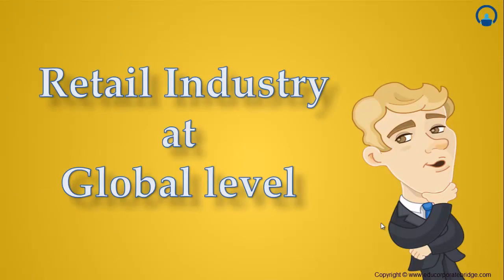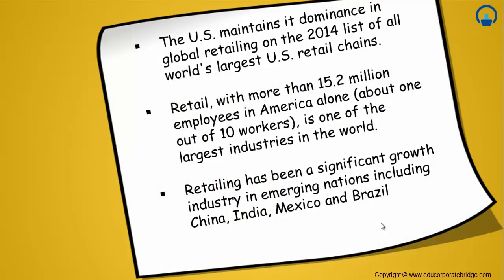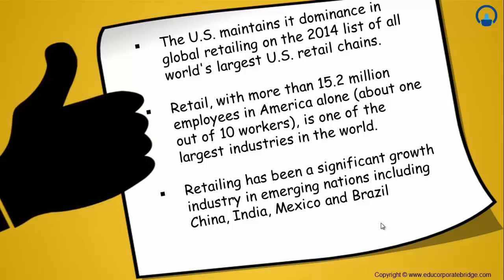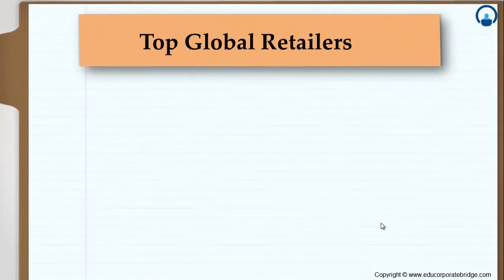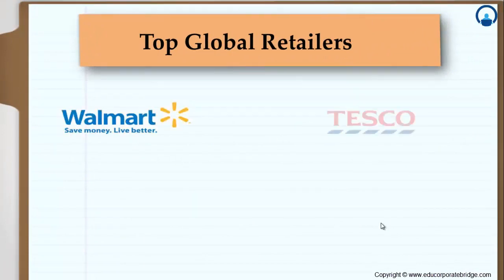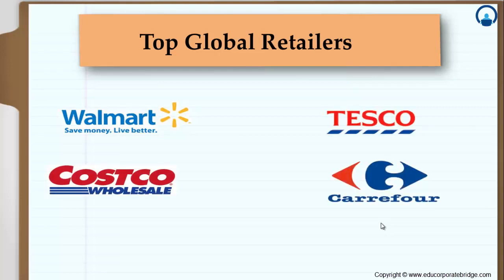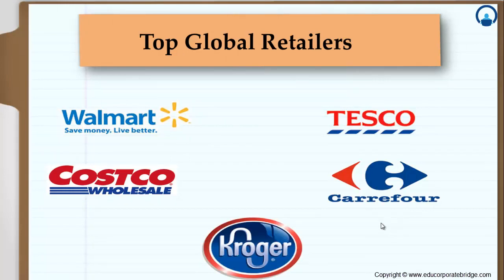So let's have a look at the retail industry at the global level. It is needless to say that the retail industry has its footprints all over the world. The US, being the superpower in retailing, has maintained its dominance in global retailing on the 2014 list of the world's largest US retail chains. The retail sector, along with its contribution to GDP, employs a high number of people in America — about 1 out of 10 workers work in the retail industry. The same is the case in emerging nations like China, India, Mexico and Brazil, which are showing huge progress in terms of this retail sector. The top global retailers are Walmart, Tesco, Costco Wholesale, Carrefour and Kroger — these are the top 5 companies at the global level.